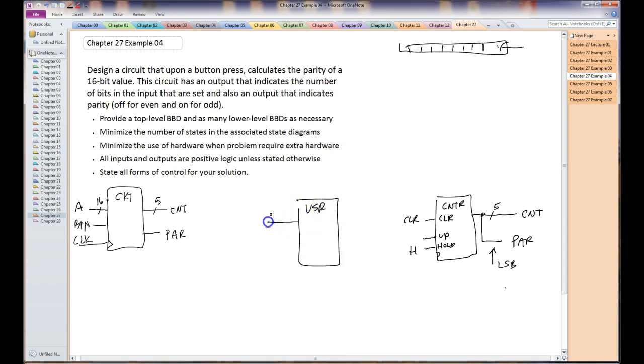USR, it's a register, so the input value is going to be the A input, and the output value is, it's going to be a 16-bit value, but what we're going to do is connect the LSB. We'll label that as such. Connect the LSB to the up input on the counter, and so that looks good.